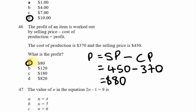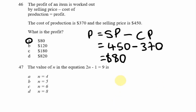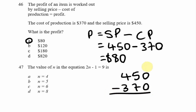Since calculators are not allowed in the exam, you can do old-school subtraction. Set it up vertically: 450 minus 370. Zero from zero is zero; you can't get 7 from 5, so borrow from the 4, leaving 3, and place the 1 making it 15; 7 from 15 is 8; 3 from 3 is zero. That gives us 80, confirming the 80 dollar profit.